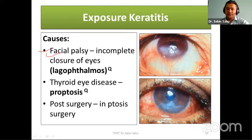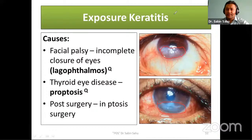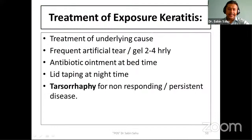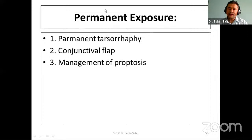Exposure keratitis usually occurs after facial nerve palsy with incomplete closure of the eyes (lagophthalmos), thyroid eye disease with proptosis, or post-ptosis surgery. It usually occurs in the inferior part of the cornea and may progress into active corneal ulceration if not treated. Treatment includes frequent artificial tear drops, antibiotic at bedtime, lid taping at night, and tarsorrhaphy for non-responding or persistent disease. Reversible exposures are treated with artificial tears, lid taping, bandage contact lens, and temporary tarsorrhaphy. Permanent exposures require permanent tarsorrhaphy, conjunctival flap, or management of the underlying cause.